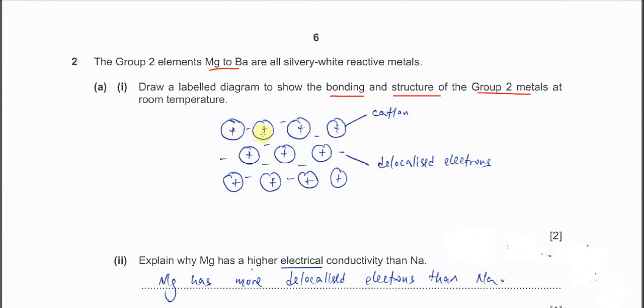Make sure the cation is surrounded by the negative charge particles which are the electrons, and you must label them. Either you put cation or just put any Group 2 ion, and you have to label the negative charge particles as delocalized electrons.